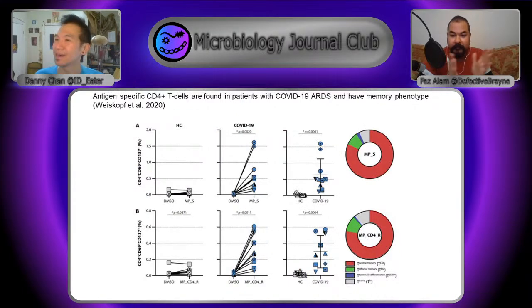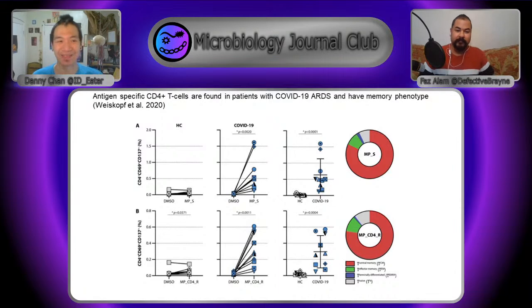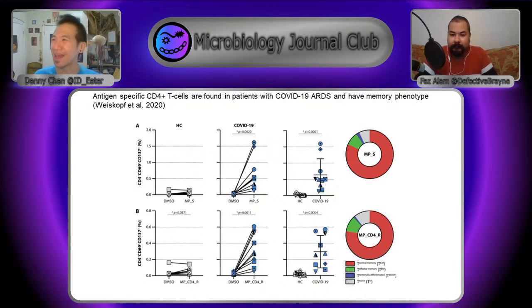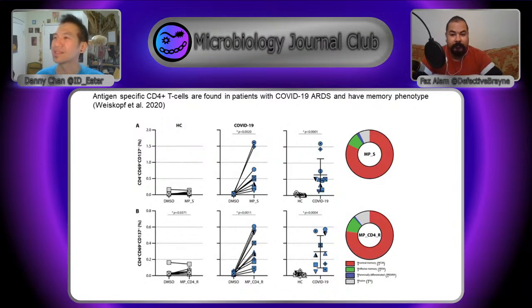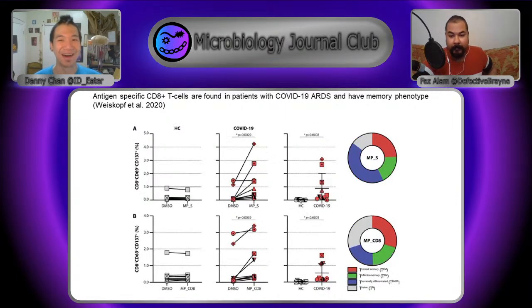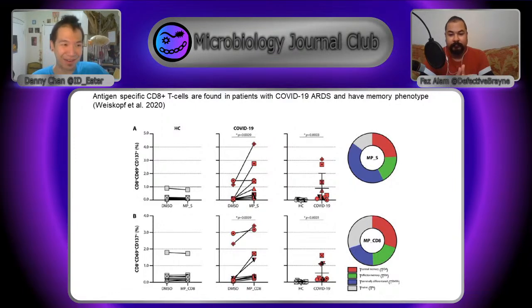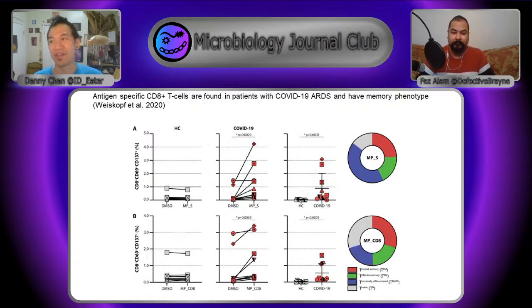In previous studies, T-cells have been seen to be elevated in severe cases of SARS-CoV-2 — specifically memory T-cells appear to be upregulated. There are two main types of T-cells we'll discuss: CD4 T-cells and CD8 T-cells. People with healthy controlled serum don't have these elevated T-cell populations, but those with severe COVID-19 show an increase in the T-cell compartment.